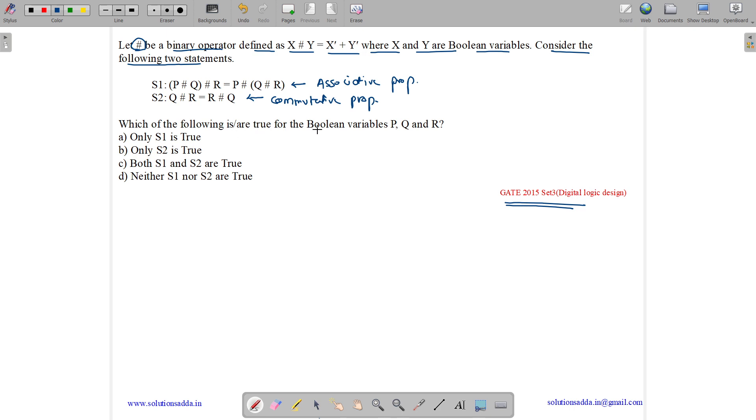Now which of the following is true for Boolean variables P, Q, and R? Let us see S1. S1 is (P hash Q) hash R on the LHS and P hash (Q hash R) on the RHS. What is P hash Q? It will equal P' plus Q', hash R. Now it will equal (P' plus Q')' plus R'.